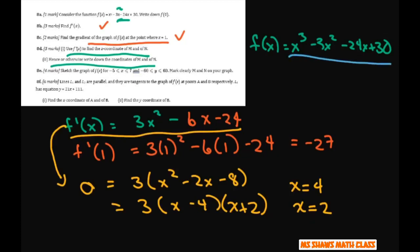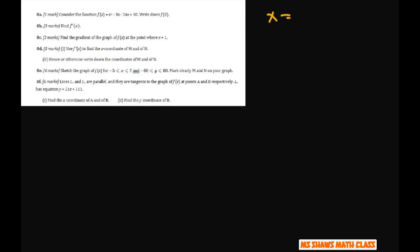So 4, it's not positive 4, it's negative 2. So that should be negative 2 here. So we have x equals 4 and x equals negative 2. So to find the coordinates of m and n, let's plug that in. So we get f of 4 equals 4 cubed minus 3 times 4 squared minus 24 times 4 plus 30. So when x is 4, y is going to be negative 50.